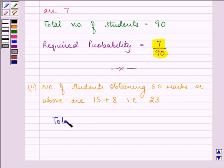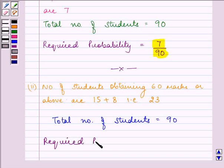Again, the total number of students is 90. So our required probability equals 23 by 90.